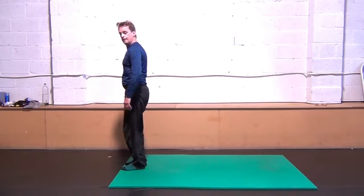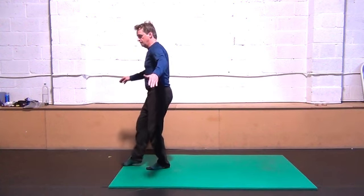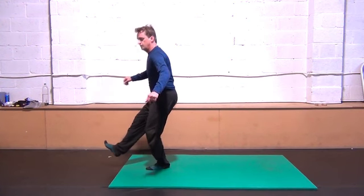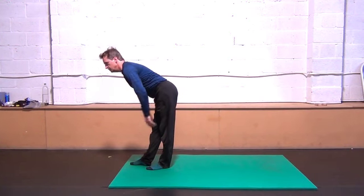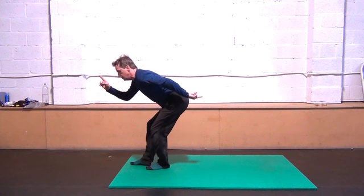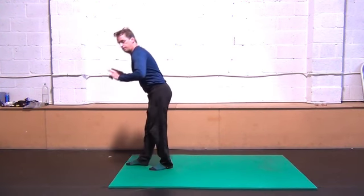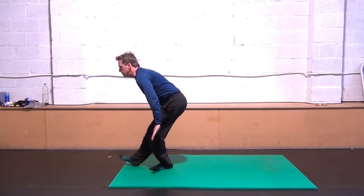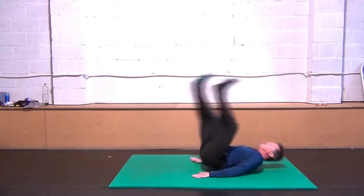For the back fall, you step back with either leg, bend at the knee, and lower yourself towards the floor. Bend over and lean in the opposite direction of the fall. This will help you to control your momentum and the fall. Reach back and down with your hands towards the floor. You catch yourself first with your hands, then your butt, and then you roll out onto your back.